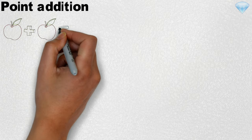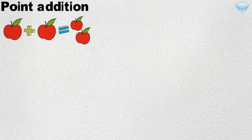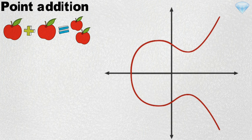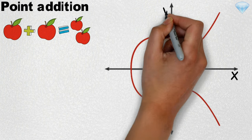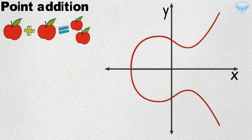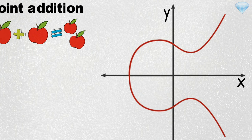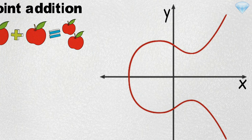Point addition. You know how you can add two numbers together to get a third one? Well, you can do the same on an elliptic curve. You can add two points on an elliptic curve together to get a third point on the curve. To add two points together, you first find the line that goes through those two points, then determine where the line intersects the curve at a third point, then reflect that third point across the X axis — and whatever point you get from that is the result of adding the first two points together.